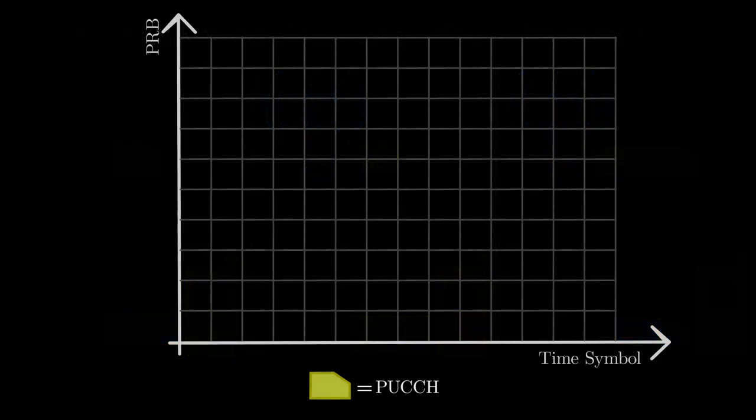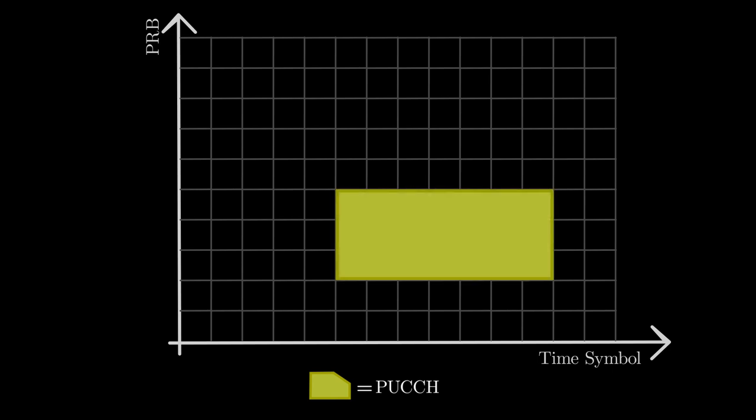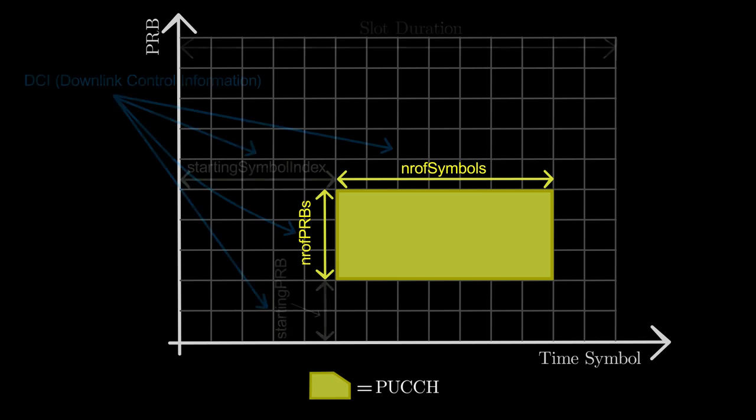Base station has to decide how many resources have to be allocated for PUCCH signal. That is how many PRBs and time domain symbols have to be allocated for PUCCH, which are conveyed to UE by downlink control information.